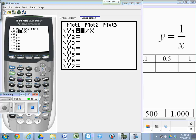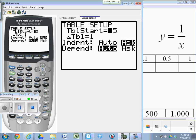Now that you have 1 over x into y1, I'd like you to go to table and let's put the table set up on ask. We've done this before. You go to second window and just make sure that the independent is on ask.